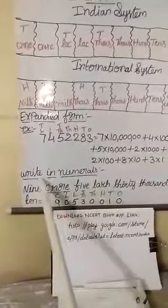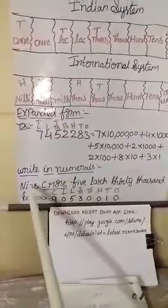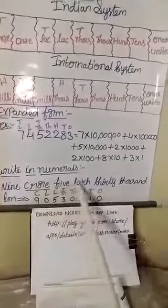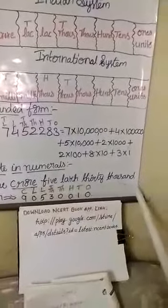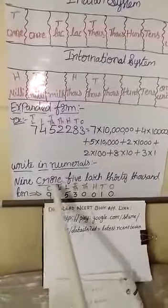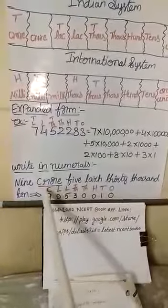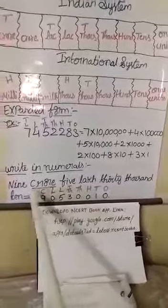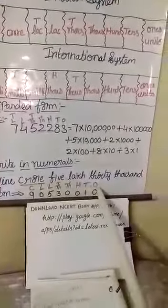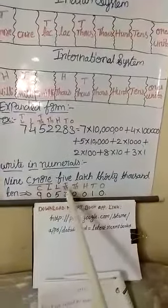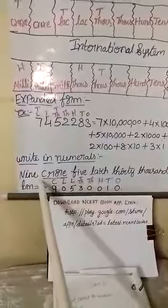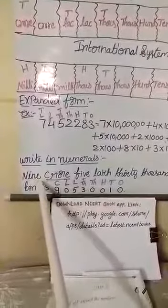This is how expanded form is written — you will solve it in the worksheet I am giving you. Next, writing numerals — we need to convert words into figures. For example: 9 crore 5 lakh 30,000 10. We need place values up to crores. Starting from ones, tens, hundreds, thousands, ten thousands, lakhs, ten lakhs, crores.